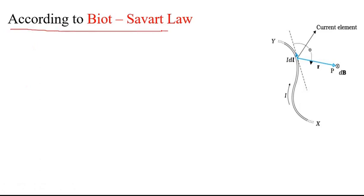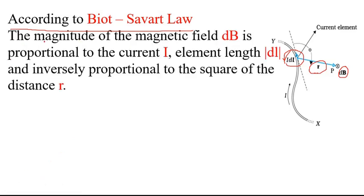According to Biot-Savart law, the magnetic field is directly proportional to the current element and inversely proportional to the square of the distance from the current element to the point at which magnetic field dB is to be determined. The magnitude of the magnetic field dB is proportional to the current I and the magnitude of the current element, and inversely proportional to the square of the distance R. When I and the magnitude of the current element are multiplied, we get the current element IDL.